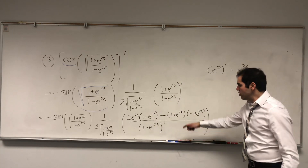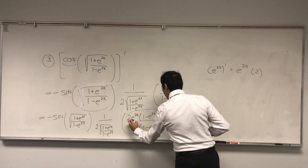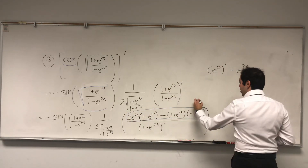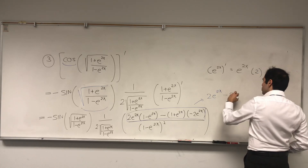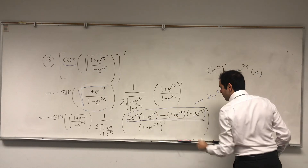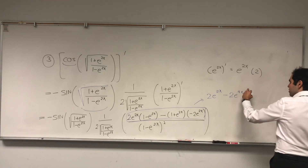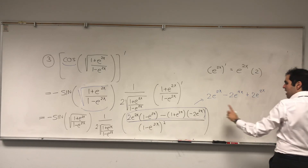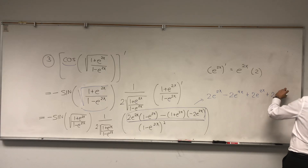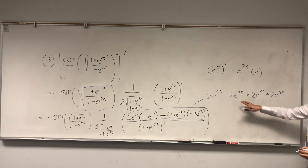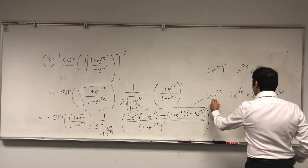Notice the numerator — we can clean this up a little bit. I actually believe it simplifies quite nicely. The first bracket becomes 2e to the 2x minus 2e to the 4x. Multiply that out, and then minus minus becomes plus — so plus 2e to the 2x, plus 2e to the 4x. Notice two terms here cancel out, and what you're left with is 4e to the 2x.